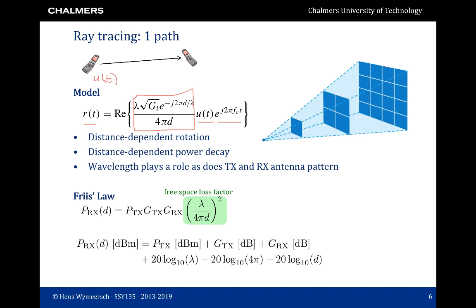First, there is a rotation due to propagation with distance, because we're sending a carrier and depending on how many complete rotations we have there will be a complex rotation at the end. Then we have a decay with distance, so the power goes down with distance. Finally, we have the effect of the antenna. Here G_L relates to the gain of the receive and transmit antenna in the line-of-sight direction, and lambda is the wavelength related to the carrier and is a function of the antenna aperture. So we see three effects: a distance-dependent rotation, a distance-dependent power decay, and an effect due to the wavelength and the gain of the transmit and receive antenna.